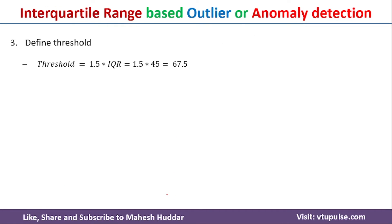Once you calculate the IQR, next we need to define the threshold. The threshold is equal to 1.5 times IQR. So 1.5 times 45 equals 67.5.